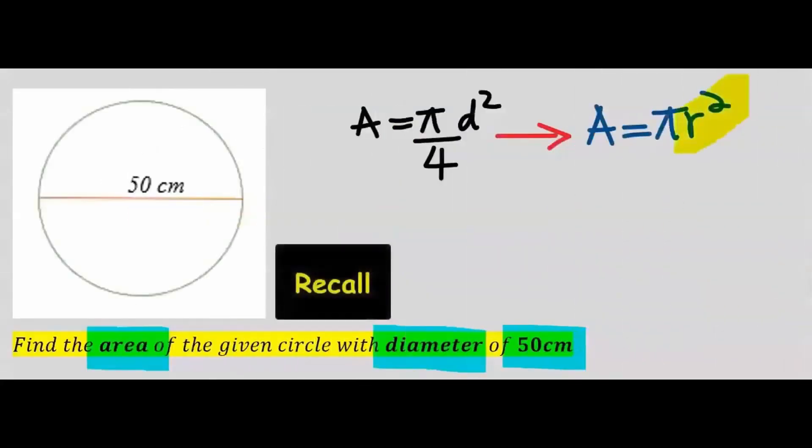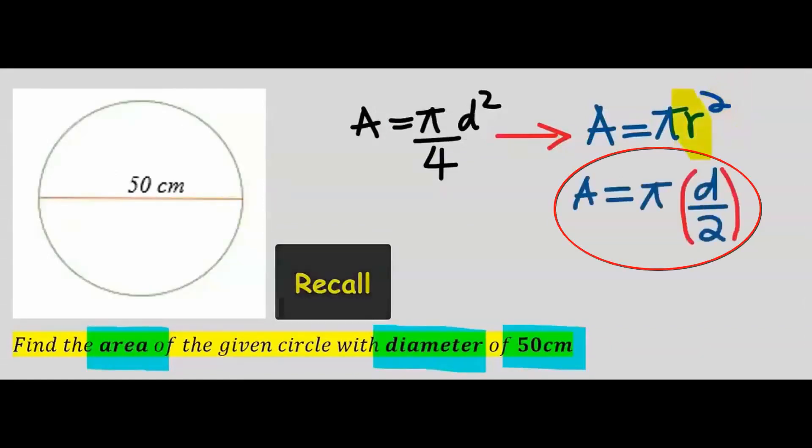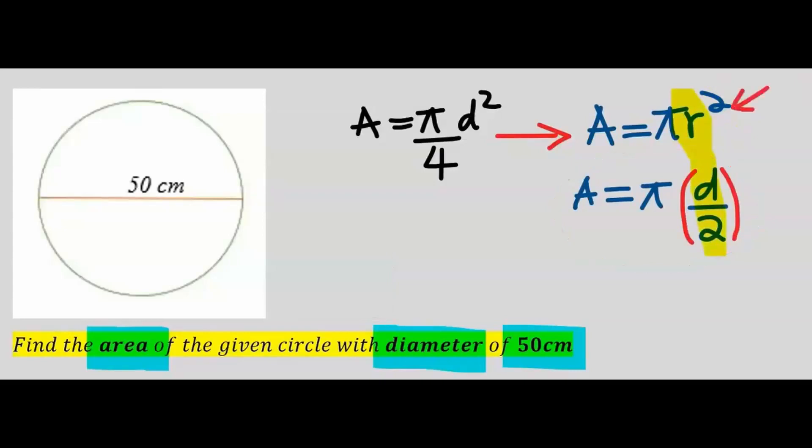Instead of r, we are going to have d over 2. But remember that the r is squared, hence this will become squared. This will square d, and the 2 will square the 2 at the denominator as well.